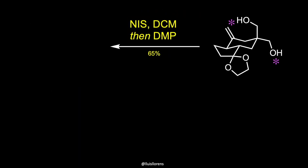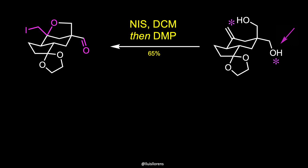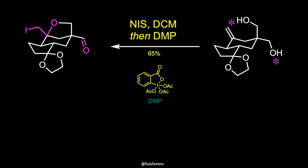In order to oxidize the equatorially disposed primary alcohol, the authors took advantage of the proximity of the axially disposed alcohol to the neighboring alkene to forge a protecting group through the action of N-iodosuccinimide. Then the addition of the Dess–Martin periodinane delivered the desired aldehyde.